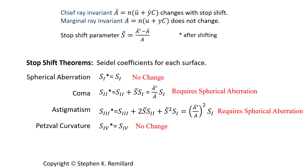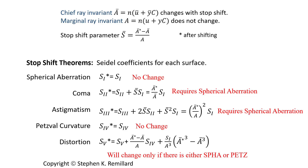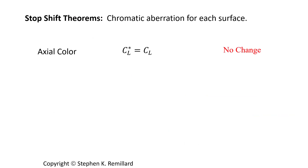Petzval curvature doesn't change when you move the stop — that's intuitive because Petzval curvature is determined by the curvature of the glass and reflecting surfaces. For distortion, in order for it to be impacted by moving a stop, you need to have either field curvature present (S4) or spherical aberration present (S1). The stop shift theorems extend to chromatic aberration as well.